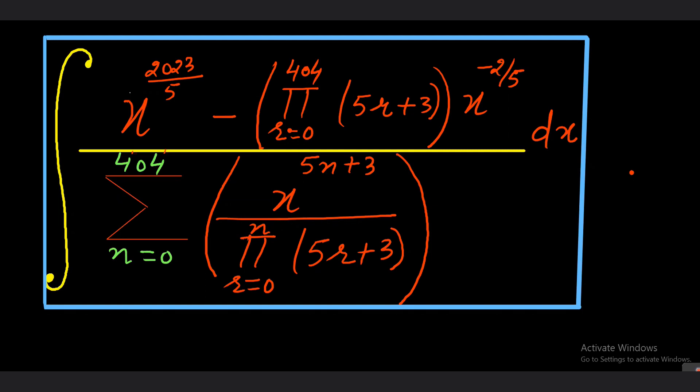The question is: integral of x power 2023/5, multiplied by the product π(r) from r=0 to 4 of (5r+3), and then x power −2/5. The denominator is summation n from 0 to 4 of x power (5n+3) upon the product π(r) from r=0 to n of (5r+3).